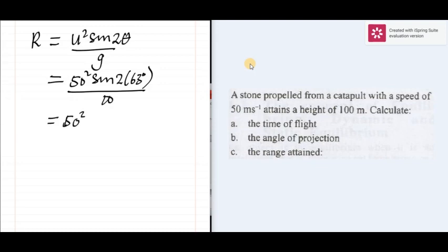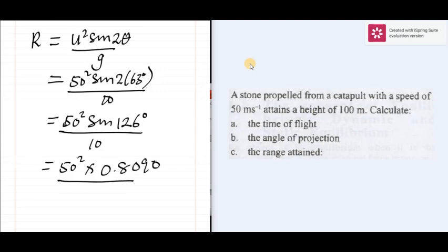50 square sin 2 times 63 will give us 126 degrees. Sin 126 is 0.8090 all over 10.